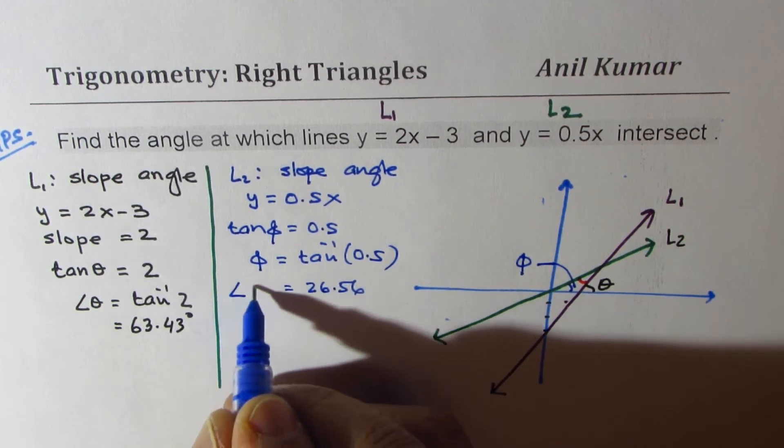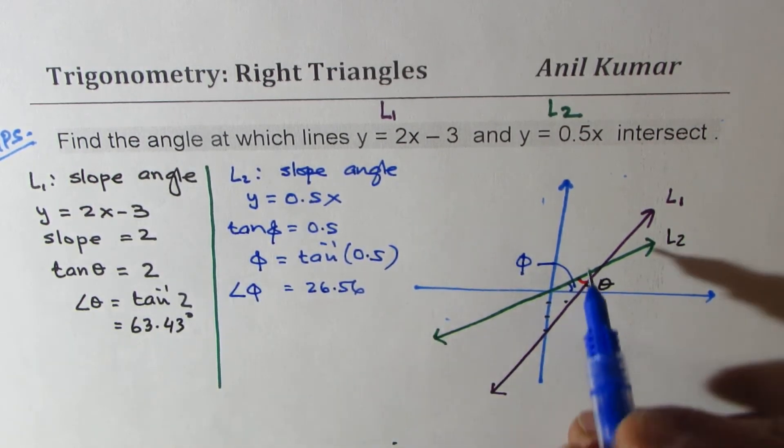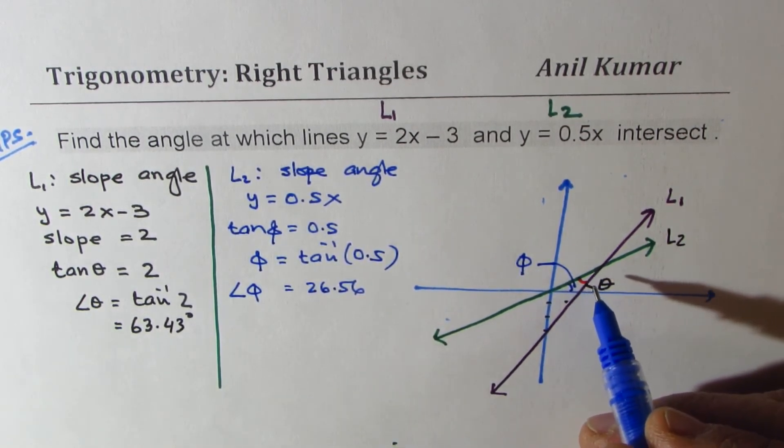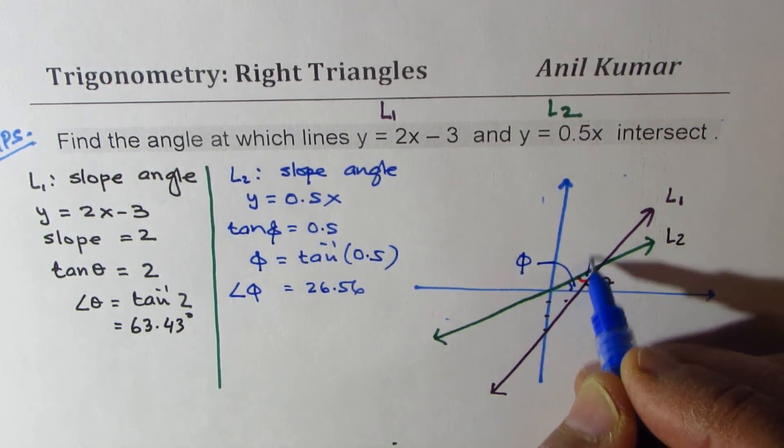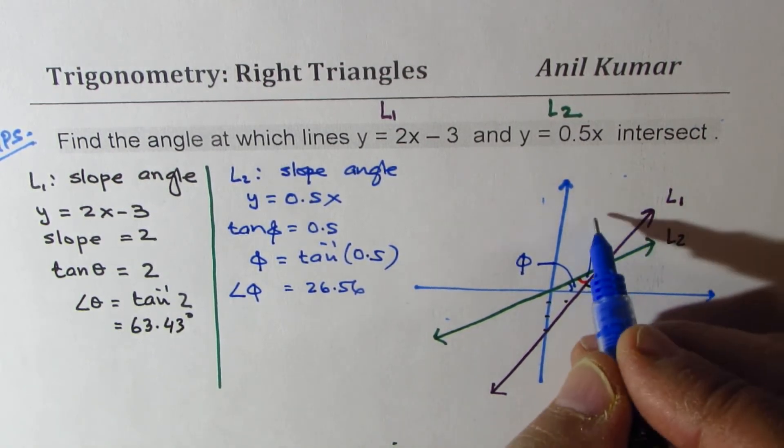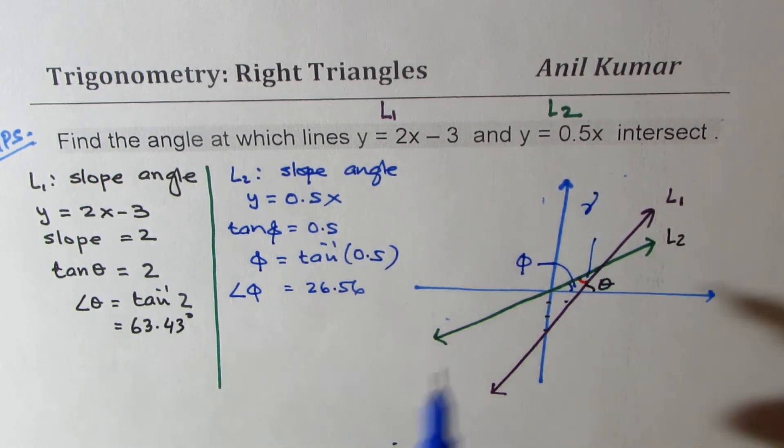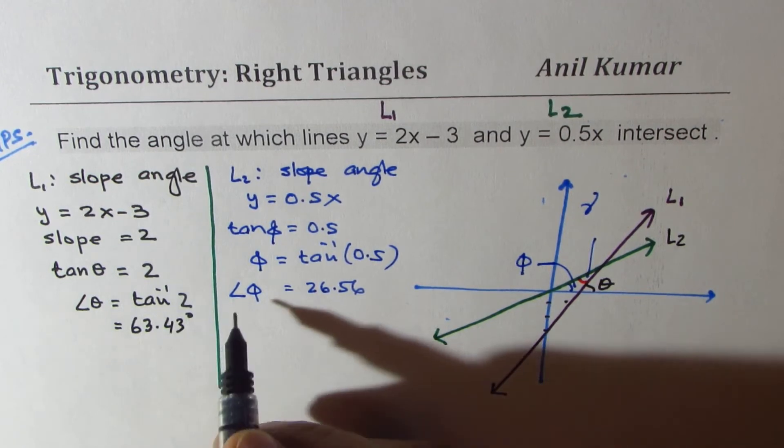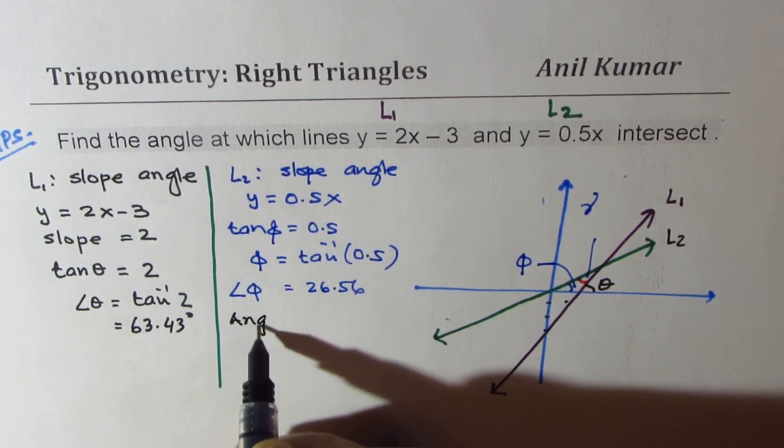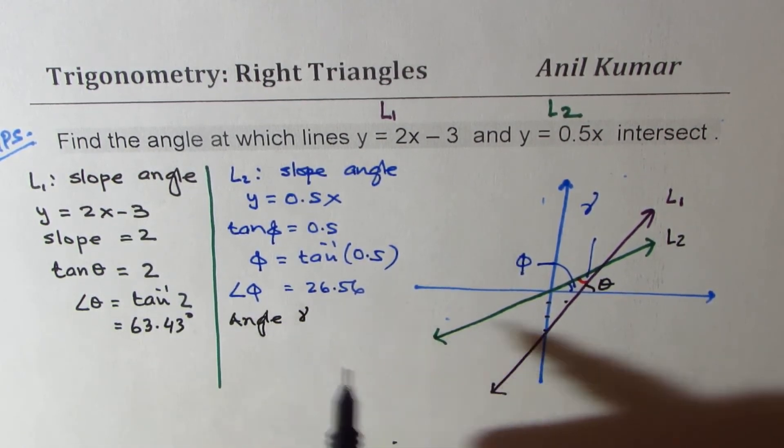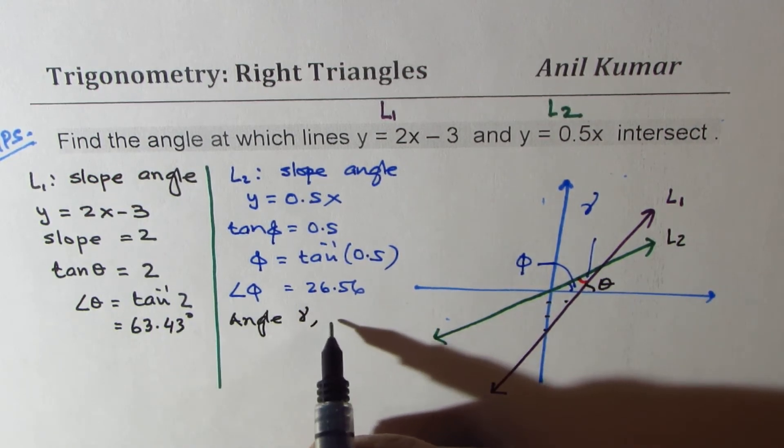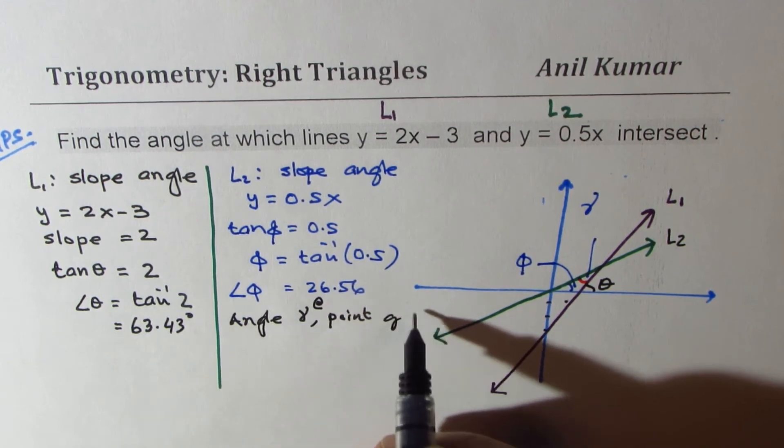So that is the measurement of the angle phi. So what is the angle required? The intersecting angle, let's call this angle gamma. So now, knowing all this, you can easily find the intersection. So angle gamma, which is at point of intersection.